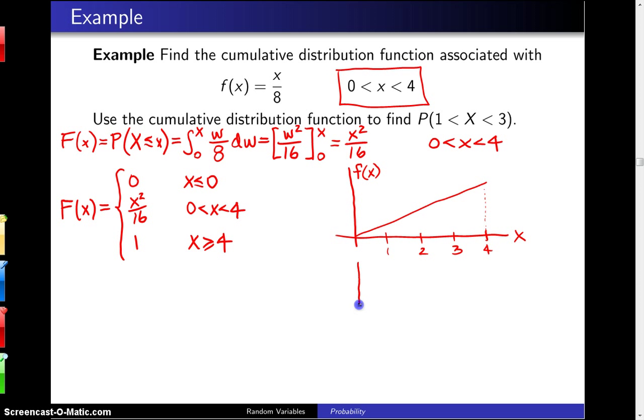The cumulative distribution function, which we just calculated, we'll put right below the probability density function. Not surprisingly, the integral of a line in this case is a parabola. So in this case F of x equals x squared over 16. It's 0 over here and then it's 1 for x values greater than 1.